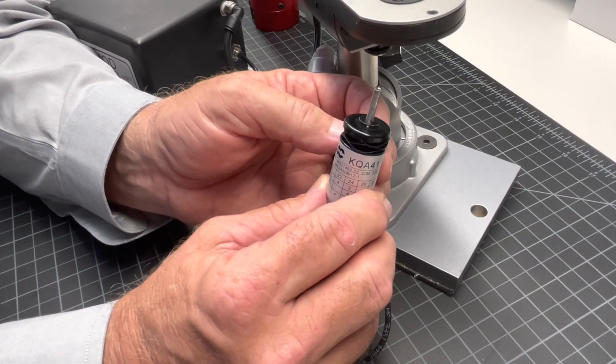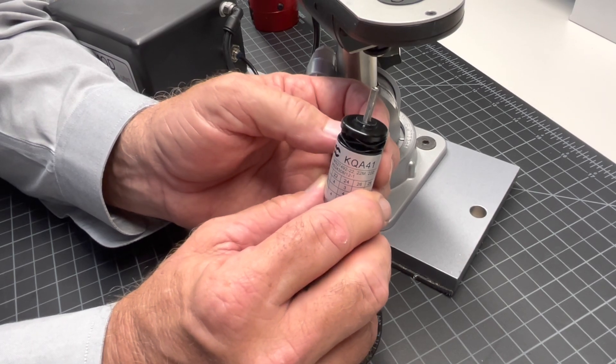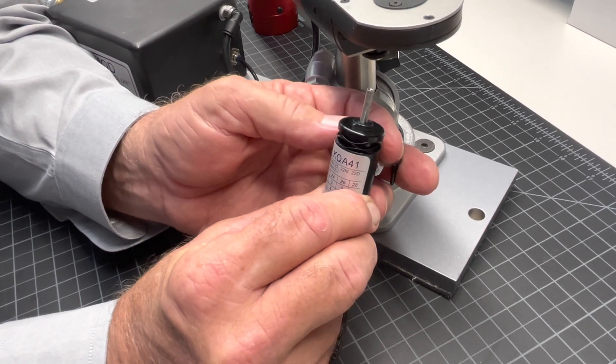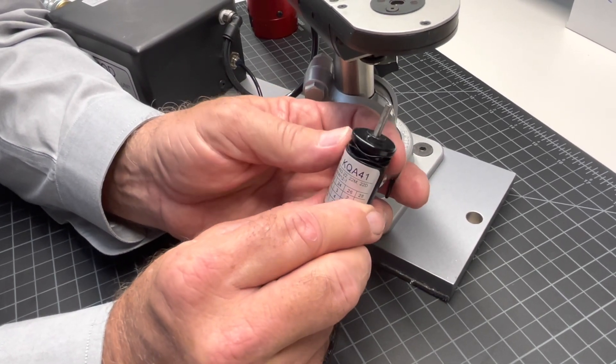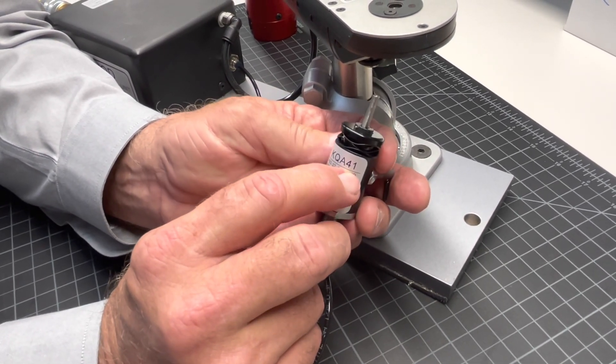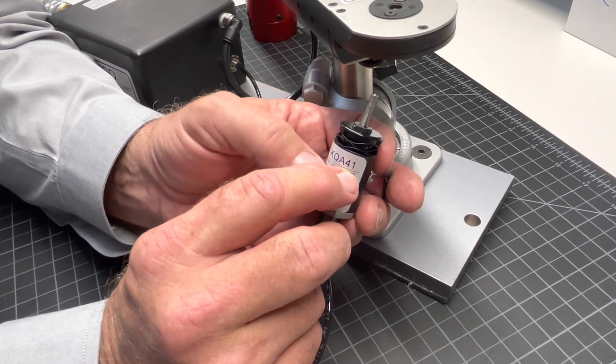When purchasing an AP mod system, you'll also need to order a unique KQA to match the contact that you're currently crimping. In this case, I have a KQA-41, which is similar to the K-41 positioner.